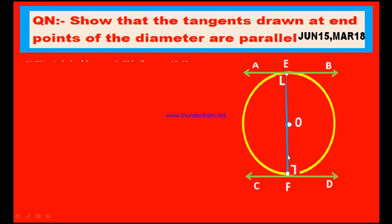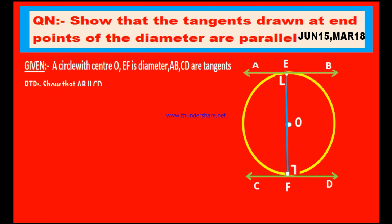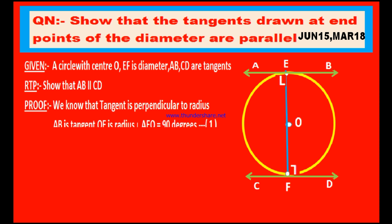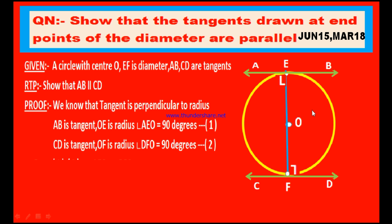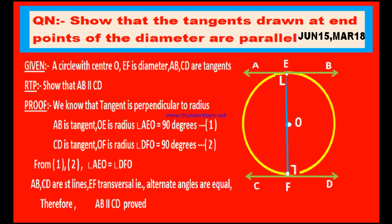Now let us go to the solution. We have given a circle with center O and EF is diameter, AB and CD are tangents. Then what to prove? We have to show that the tangent AB is parallel to the tangent CD. Show that AB is parallel to CD.